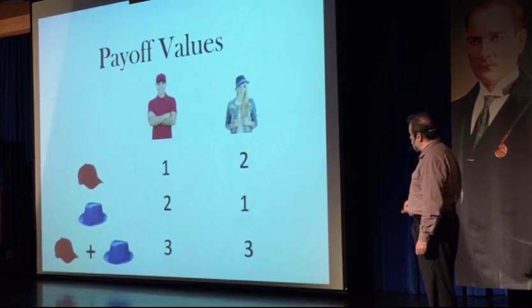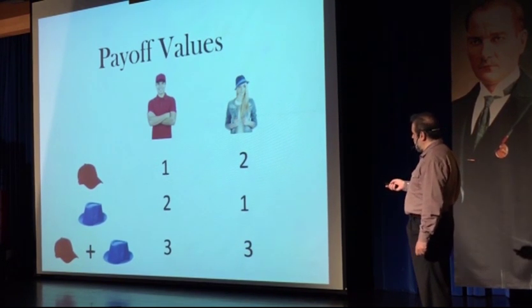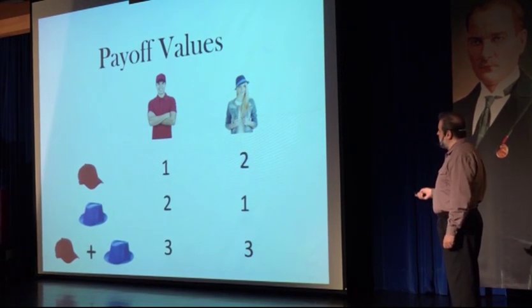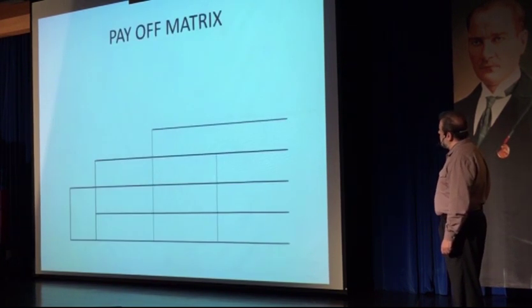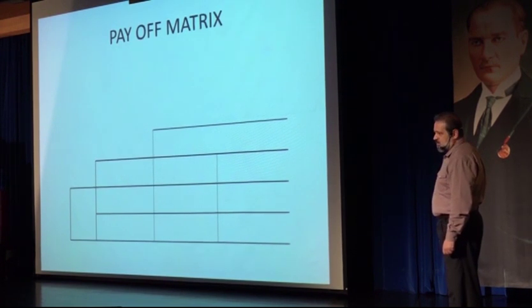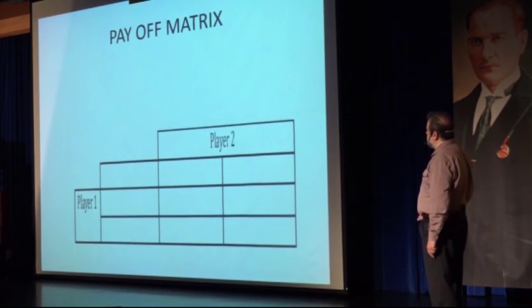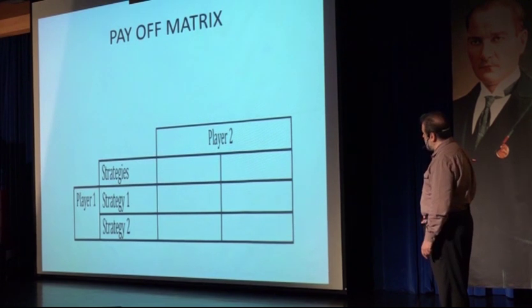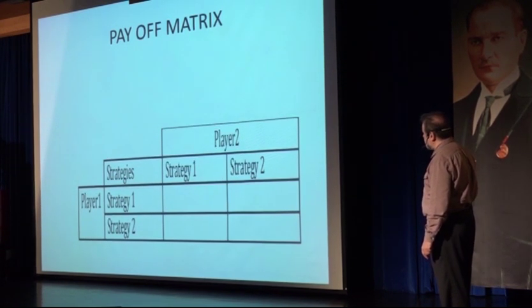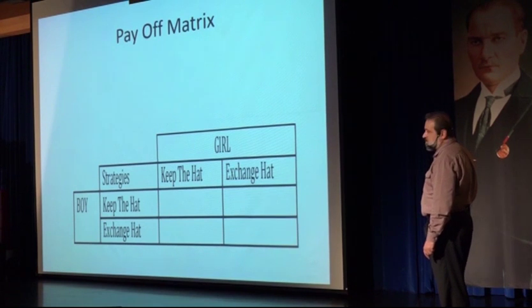The red hat value for the boy is one, but two for the girl. The value of the blue hat for the boy is two, and having both hats is three, and vice versa. Why are they going to make the fair exchange? That's the question. This is the payoff matrix we use in game theory solutions. Here I have player one on the left-hand side, player two on the top. I have the strategies of player one and the strategies of player two, and here are the payoffs in the cells. This is the actual payoff matrix of our game.